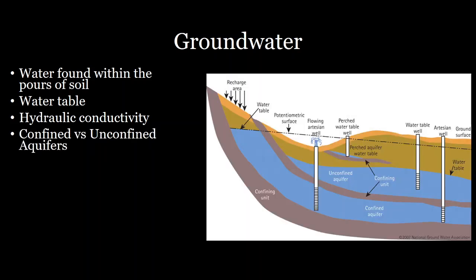Groundwater has a very hard time passing through a confining unit layer. When you have multiple confining units with a layer in between them, you can form a confined aquifer. A confined aquifer has a low hydraulic conductivity layer both above and below it, and as a result you can have pressure build up in this layer. Whereas an unconfined aquifer is just sitting on top of a confining unit and doesn't have anything above it that would cause it to gain pressure.